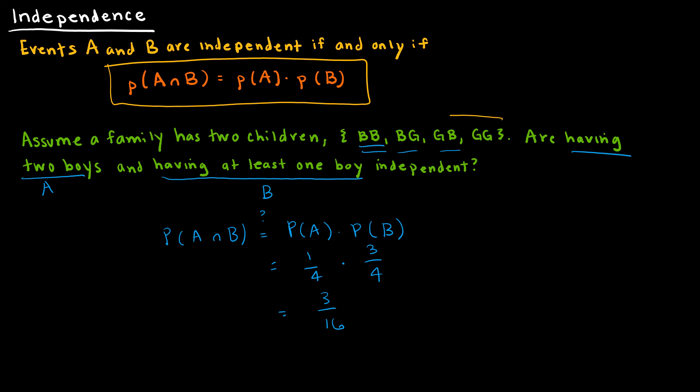On the left side, I'm looking at the probability of A intersect B, which means that both events have occurred. How many of those four do they have both two boys and at least one boy? That's just the first one. They have two boys and at least one boy. So that's just 1/4, and 1/4 not equal to 3/16, and therefore we can say that they are not independent.